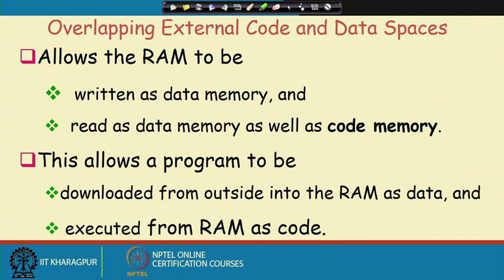Many microcontroller-based systems have an interface with a personal computer, and through a download cable the program is downloaded onto the kit. The program is first developed on the PC — simulation and all — then the object code is generated and downloaded onto the 8051 kit. If it is ROM, programming that ROM is costly and erasing is more difficult compared to RAM. Instead, if we use RAM as the code memory as well, we can just write the values onto the RAM and the entire program can be downloaded into RAM.